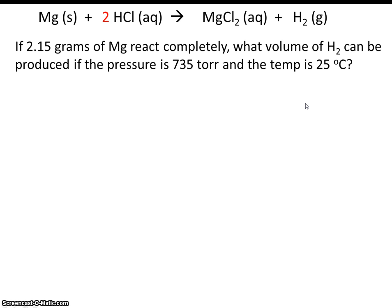If 2.15 grams of magnesium react completely, what volume of hydrogen can be produced if the pressure is 735 torr and the temperature is 25 degrees C?